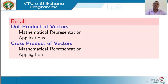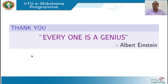To summarize, we discussed the dot product and cross product — their mathematical representations and applications. The dot product is applied when calculating work done, flux, and vector projection, while the cross product is applied in situations such as the force on a moving charge in a magnetic field and torque. We close with a quote by Albert Einstein: 'Everyone is a genius.' Thank you very much for your patient listening.